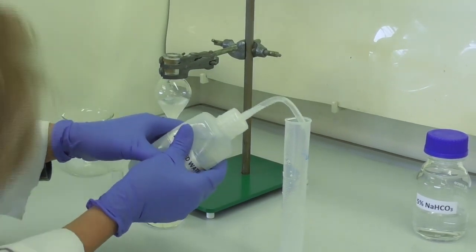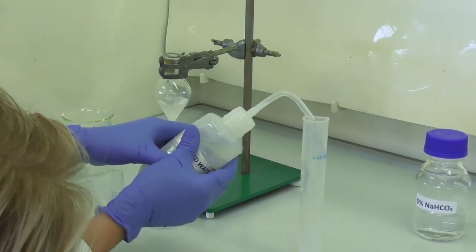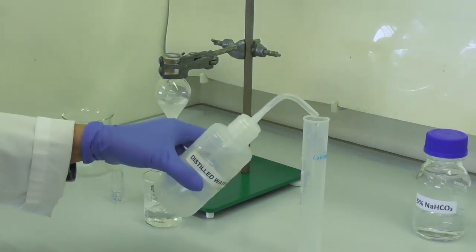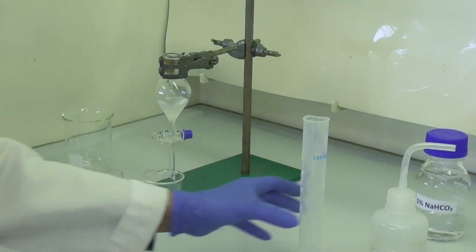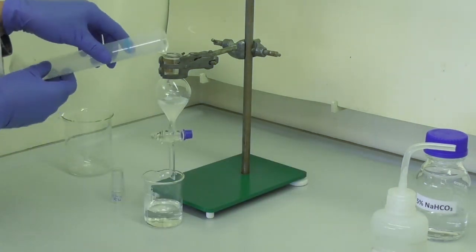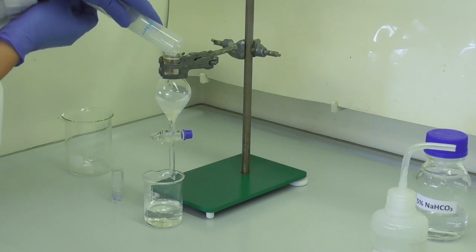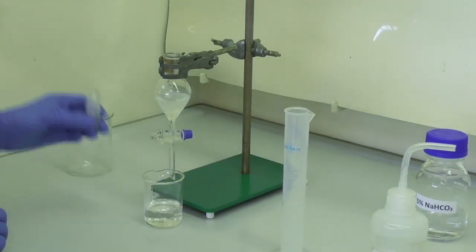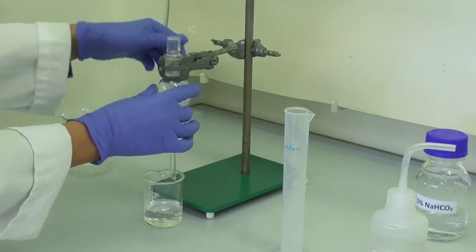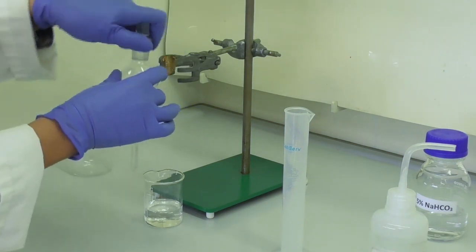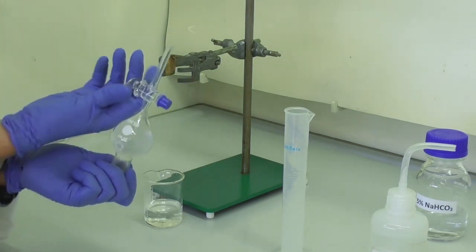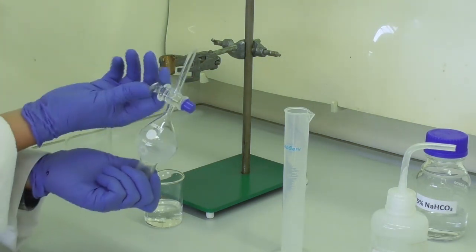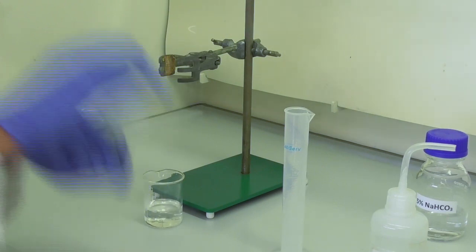We then repeat the washing process with 8 ml of distilled water. We measure out the water in a graduated cylinder, add this to our separating funnel, and shake the mixture for a minute or two. Again, we have to release any build-up pressure periodically.